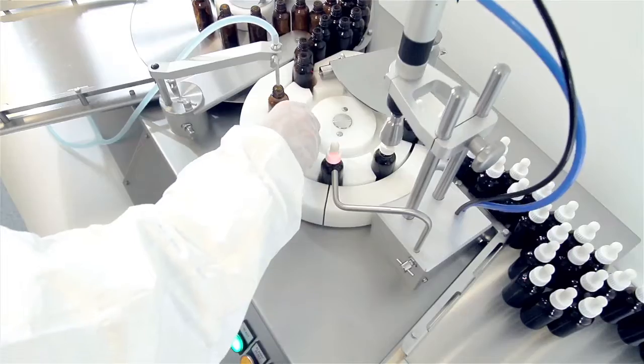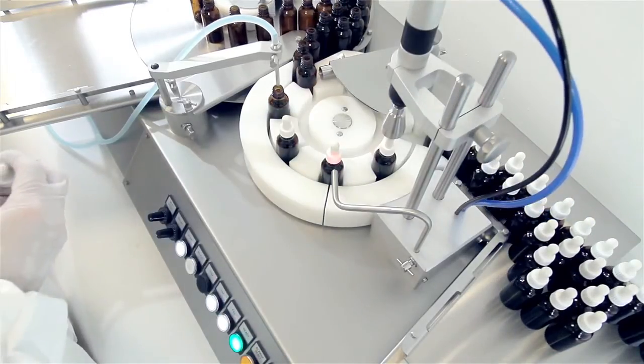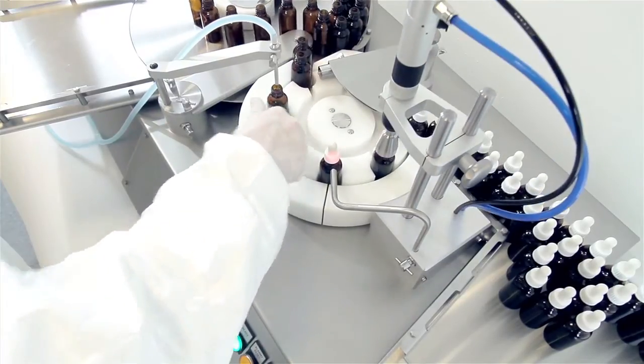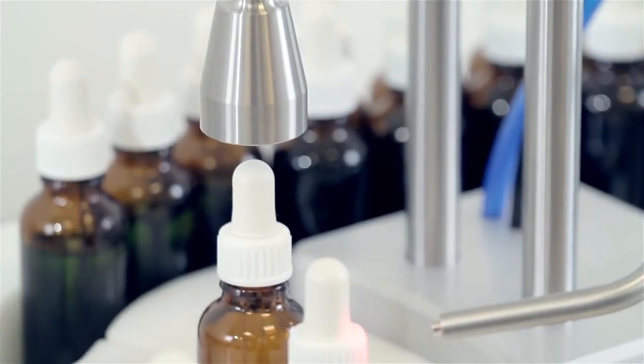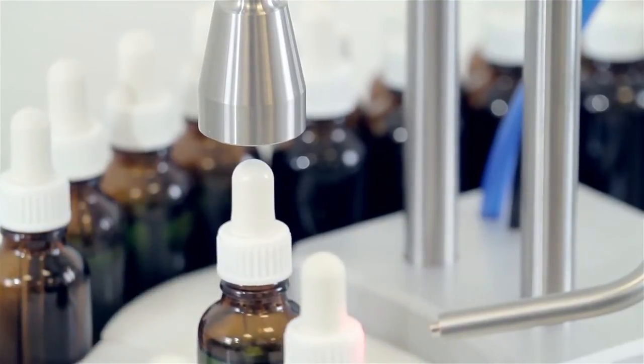Filled and capped bottles leave a standard FlexFeed 30 on trays. However, the machine can be customized with bottles being fed onto a conveyor into a labeling machine, further improving productivity.